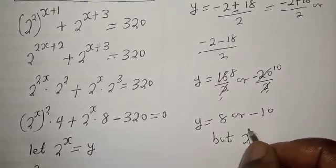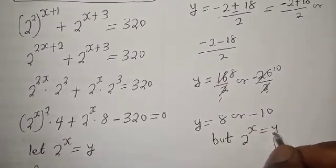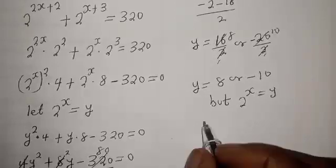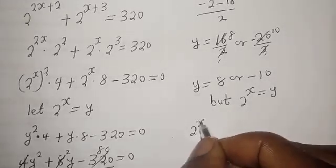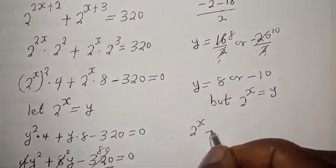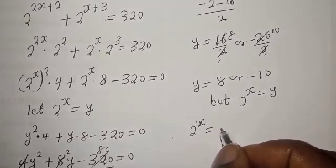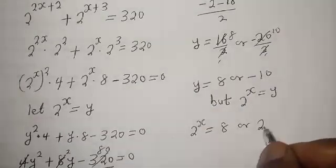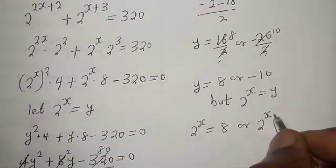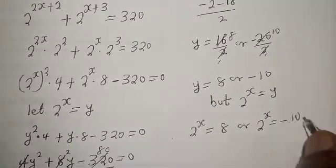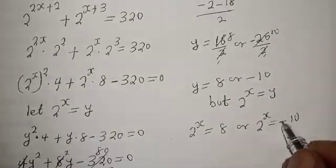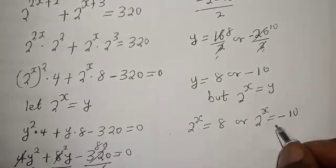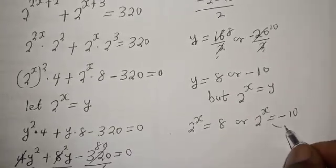Since 2 raised to power x is equal to y, we have 2 raised to power x equals 8, or 2 raised to power x equals minus 10. But 2 raised to power x cannot be equal to minus 10, so this is rejected.